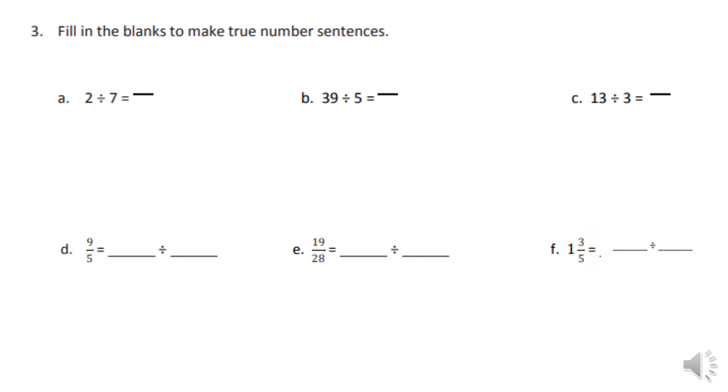Okay, now fill the blanks to make true number sentences. Well, we know two divided by seven is going to be equal to two sevenths, now that we understand it. 39 divided by five is 39 fifths. 13 divided by three would be 13 thirds.